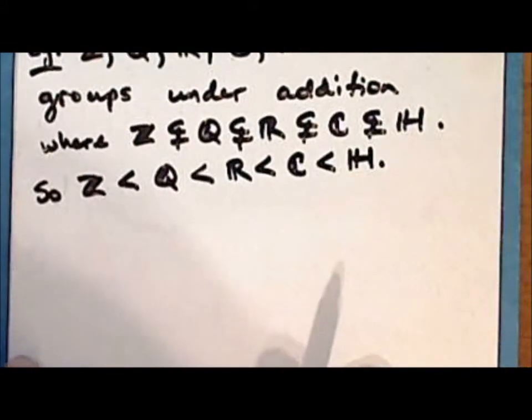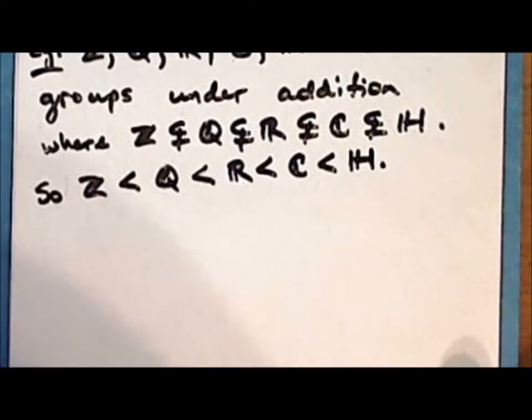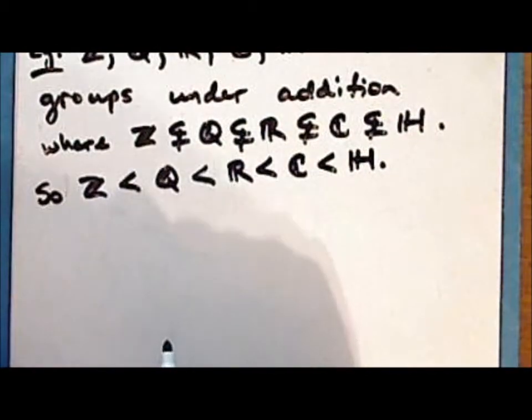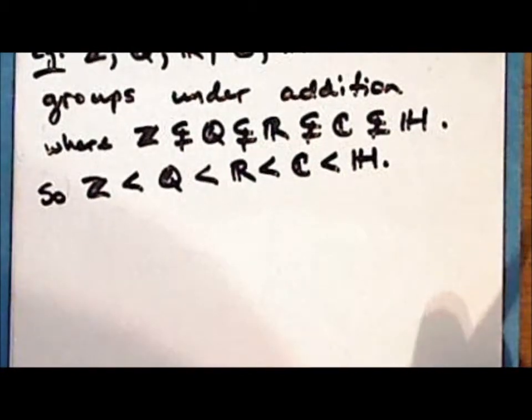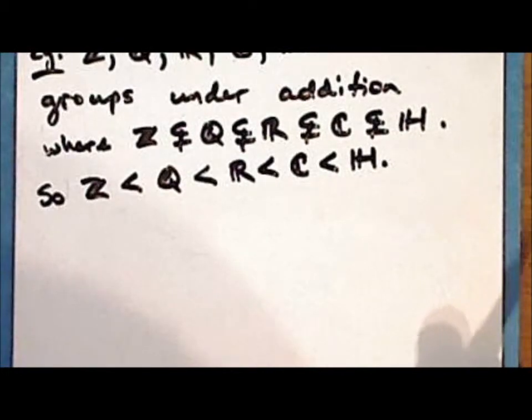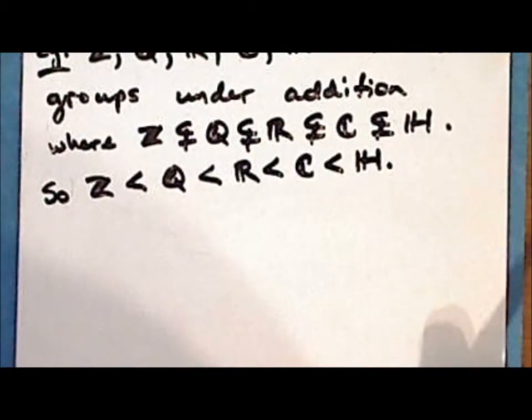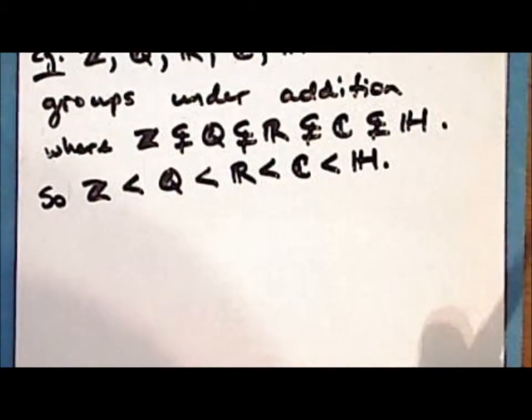From this point forward, we will use the convention that for an arbitrary group, we will use the notation of a multiplicative group, especially when it is not known whether or not the group is Abelian. Next, we will prove a lemma.